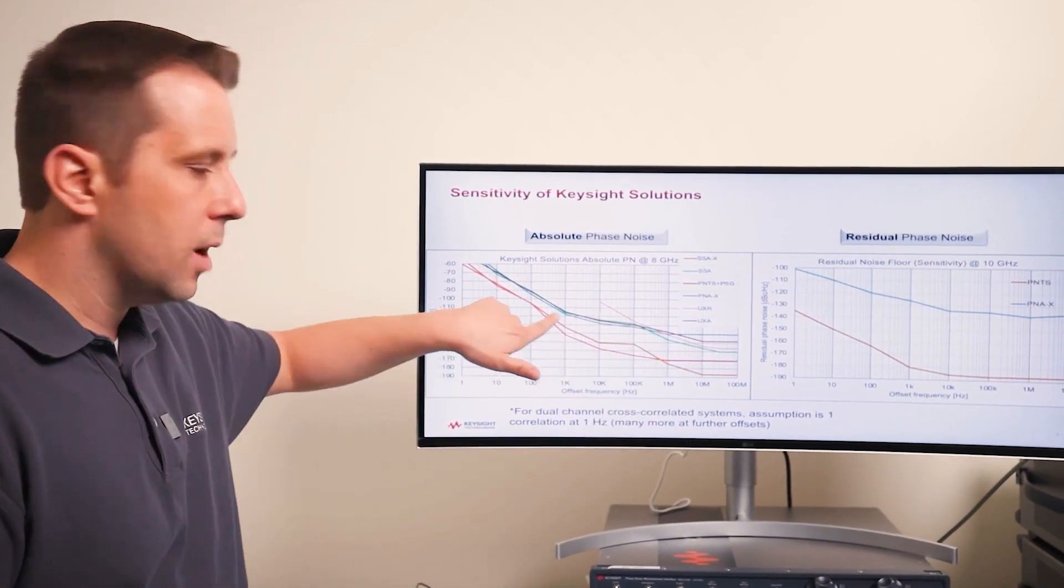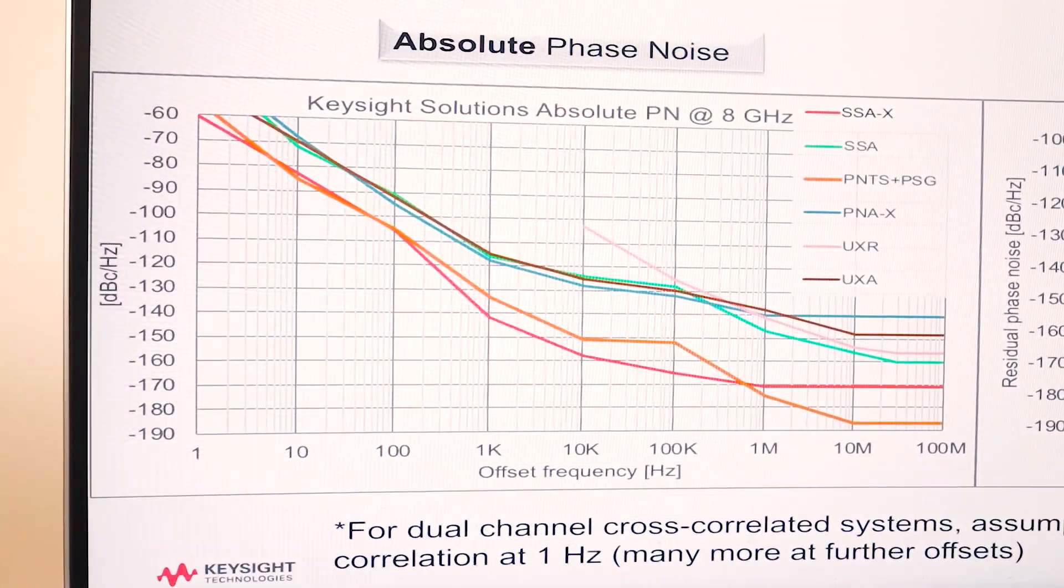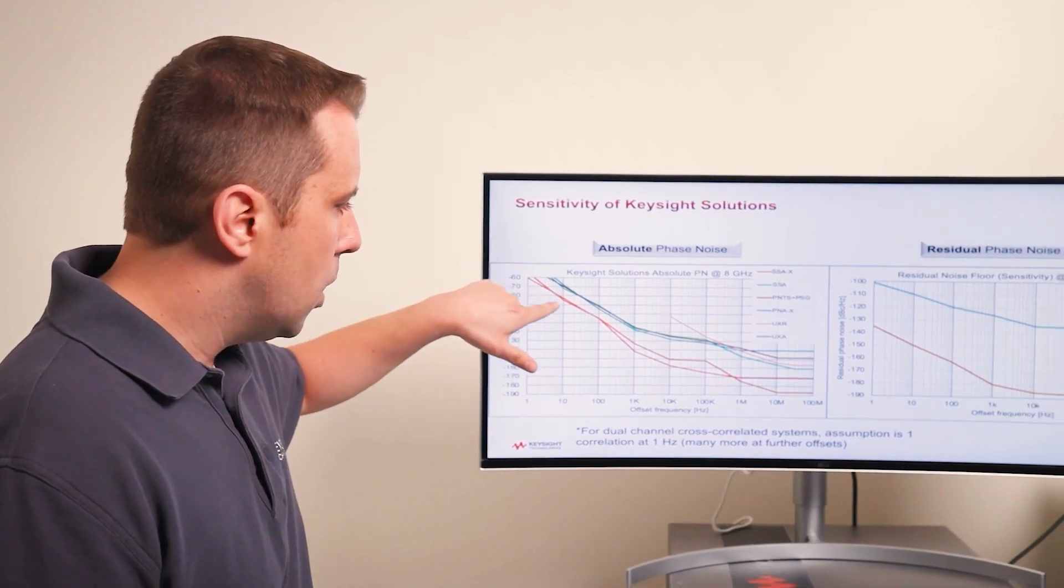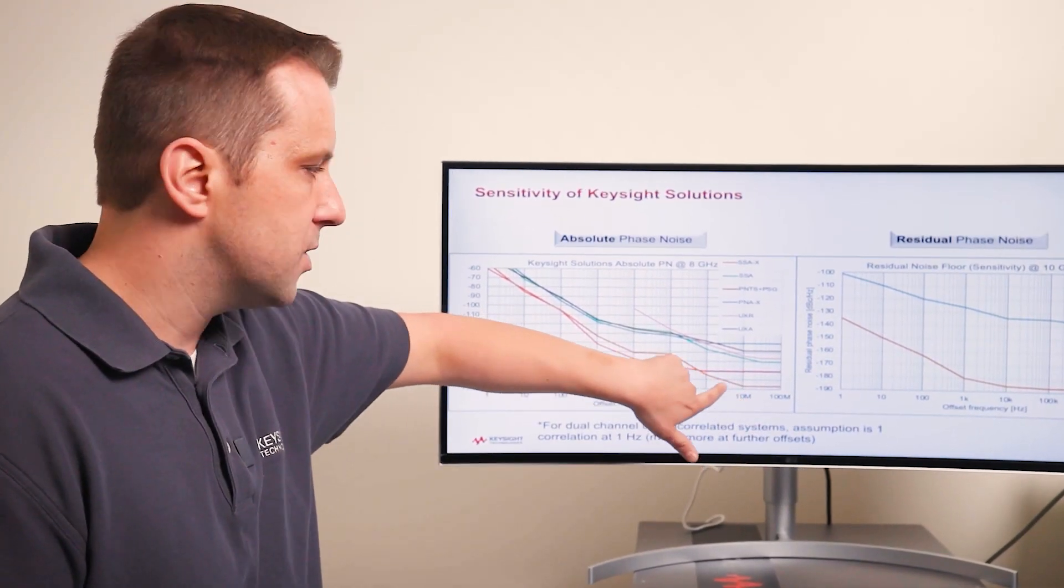The SSAX is the red trace here, and at many of the offsets it's one of the best solutions at eight gigahertz. The PNTS plus the PSG is this burnt orange trace, and you'll notice that it's the best, especially at further out offsets.